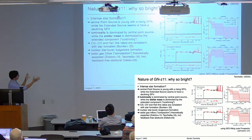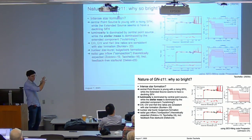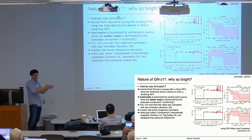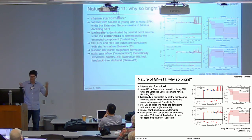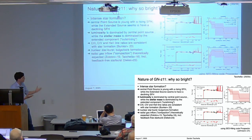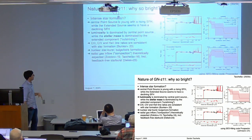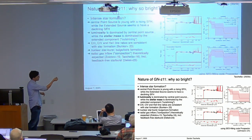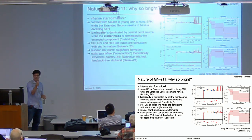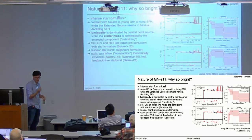Why is GNZ-11 so bright? You can reproduce the observed SED very well with simple stellar populations plus some dust absorption and nebular emission—no peculiar stellar populations are needed. The reason for being so bright is simply that it has a nuclear starburst that is really bright: low in mass but high in star formation.